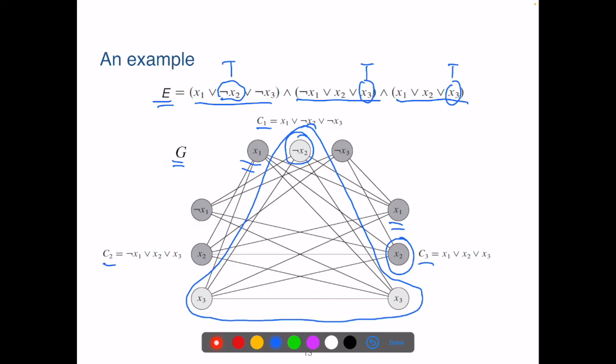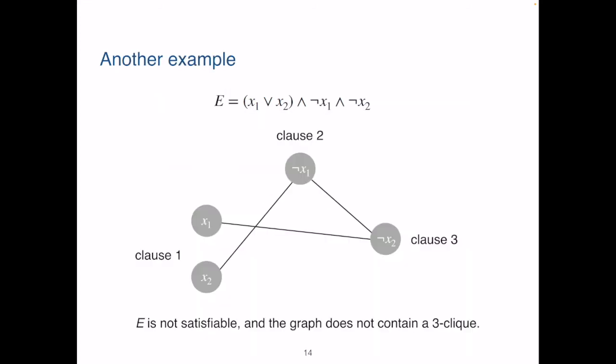So that concludes the proof. Here is another example. We have another input instance E. E has three clauses. We can construct a G accordingly.